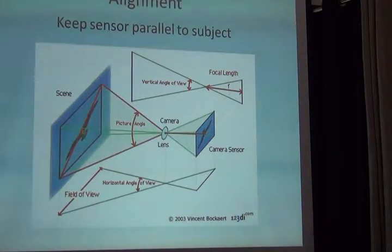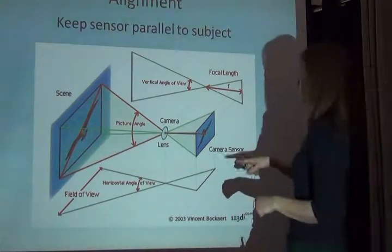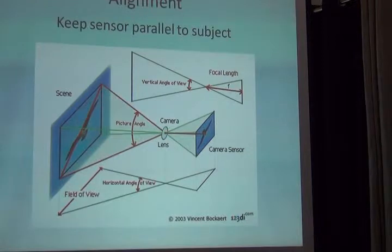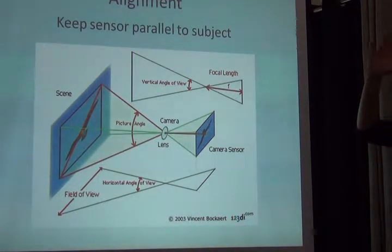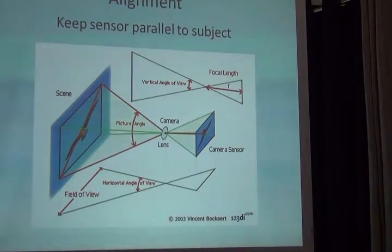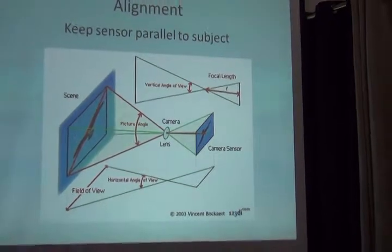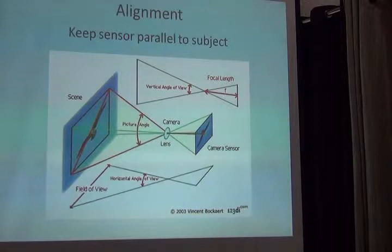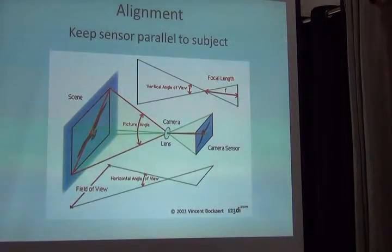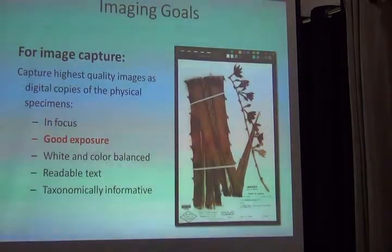Tied into being in or out of focus is alignment. We need to make sure that the camera sensor stays parallel to whatever we're photographing. If I have an herbarium sheet flat on a table and my camera is pivoted in any way, I'm distorting the image and it doesn't represent the true specimen. Any scale bar placed on that specimen will not be accurate unless it's in the same plane as the specimen and the sensor.